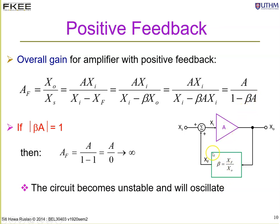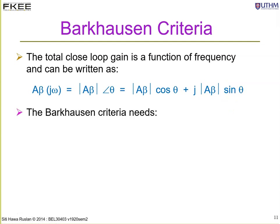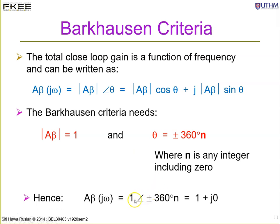The phase shift around the loop must be 0 or 360 degrees. The total closed-loop gain A·beta is a function of frequency, expressed in terms of magnitude and phase. The Barkhausen criteria in rectangular form is: |A·beta|·cos(θ) + j·|A·beta|·sin(θ), which must equal 1 + j0. This means the imaginary part must equal zero, and from this condition we can find the frequency of oscillation for a given circuit.